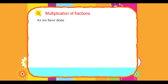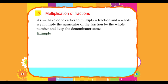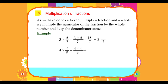As we have done earlier, to multiply a fraction and a whole, we multiply the numerator of the fraction by the whole number and keep the denominator the same. For example: 3 × 5/7 = 15/7 = 2 1/7. And 4 × 4/9 = 16/9 = 1 7/9.